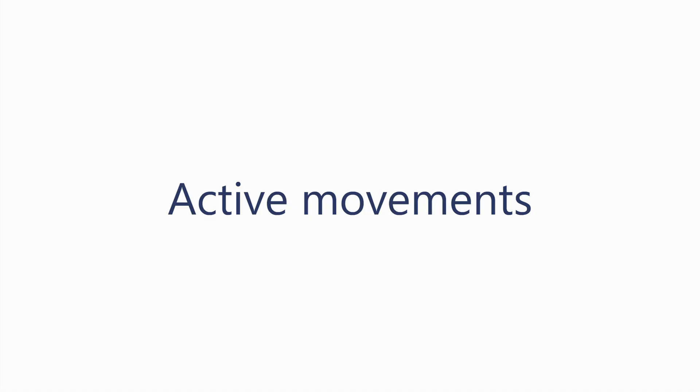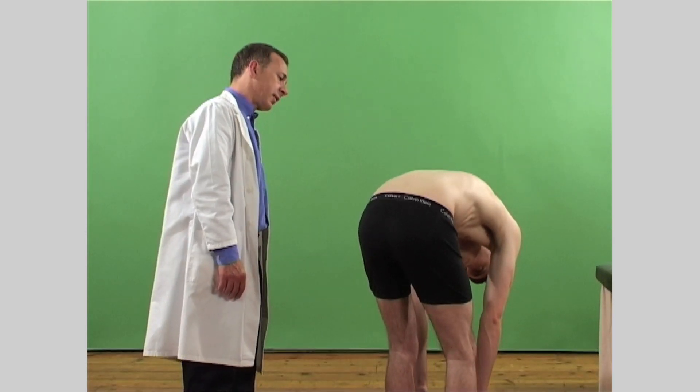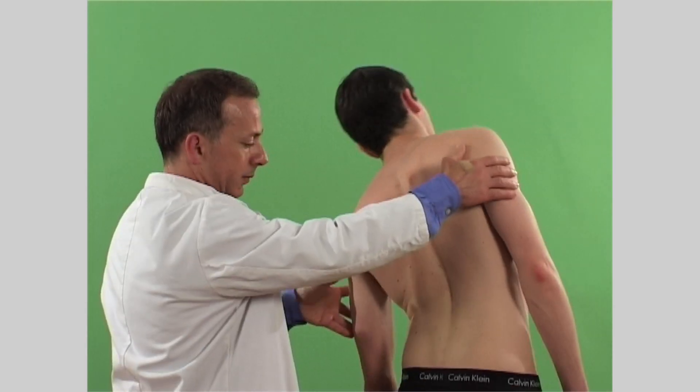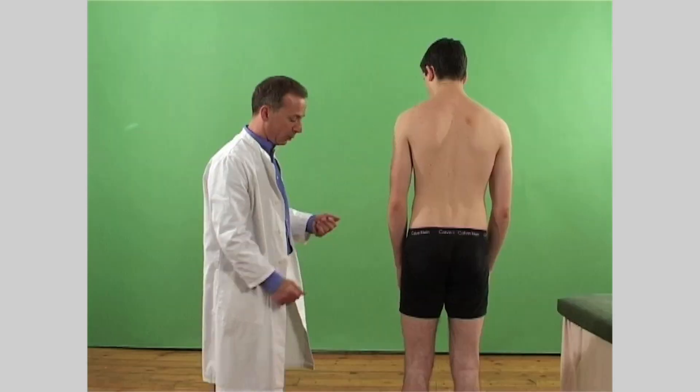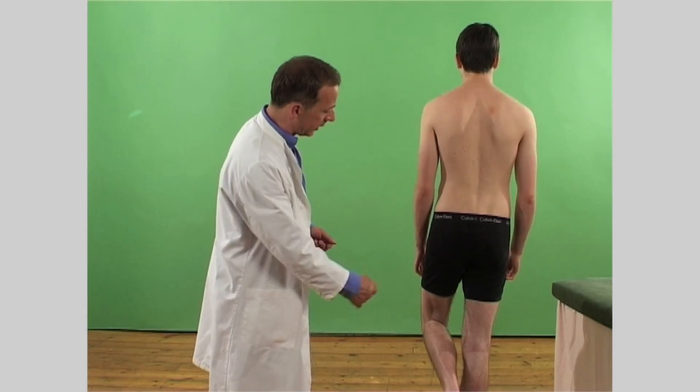Then assess the active movements which relate to this region. With the patient standing, ask them to perform the same movements as demonstrated earlier with the lumbar spine. This produces shearing and torque forces through the sacroiliac joints. Get them to flex, extend, rotate and side bend the lumbar spine. In addition, check their weight bearing by getting them to stand on each leg in turn.